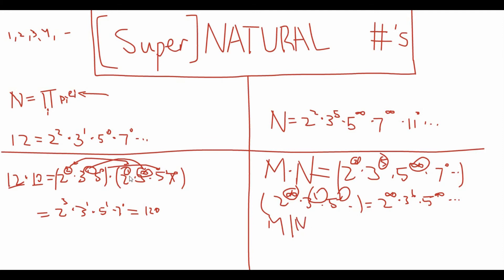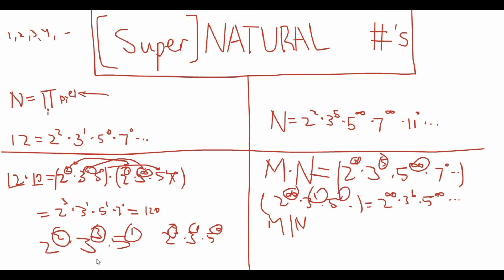Finally, we can define a least common multiple and greatest common divisor just like with natural numbers. For example, given 2 to the power of 2, times 3 to the power of 3, times 5 to the power of 1, and on the other hand 2 to the power of 3, times 3 to the power of 1, times 5 to the power of 0, the least common multiple is found by taking the greater exponent from each pair: 2 to the power of 3, times 3 to the power of 3, times 5 to the power of 1. The GCD is found by taking the smaller exponent from each pair. Similarly, this applies to supernatural numbers.